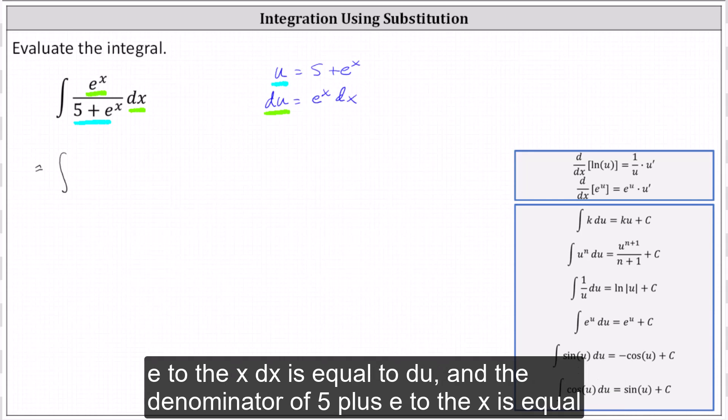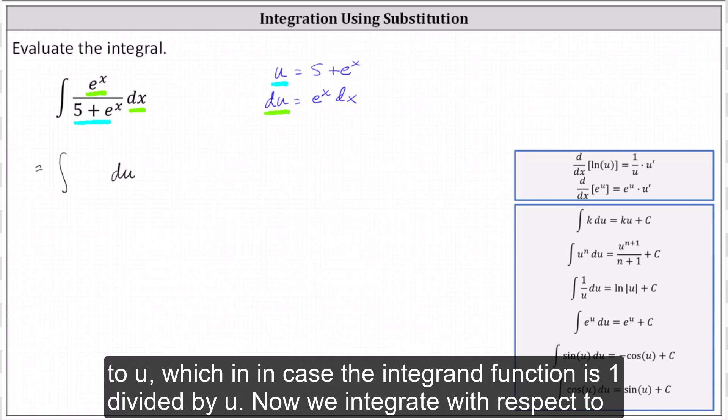Again, e to the x dx is equal to du, and the denominator of 5 plus e to the x is equal to u, which indicates the integrand function is 1 divided by u.